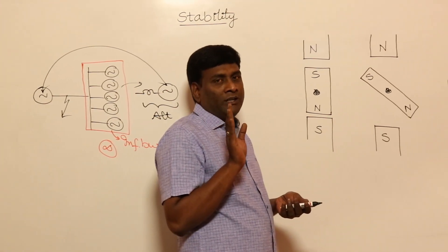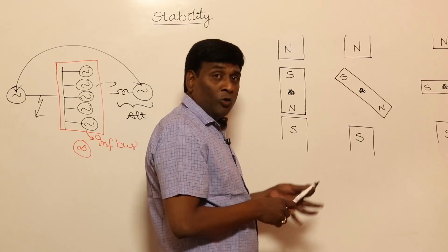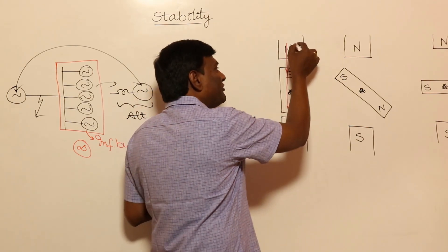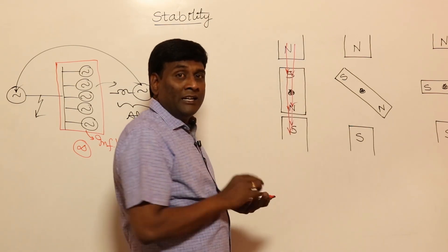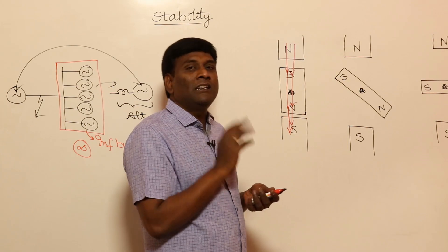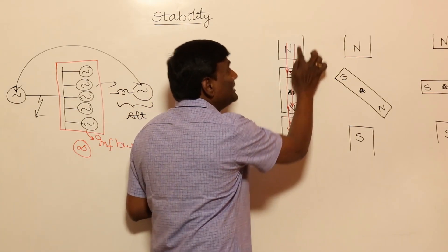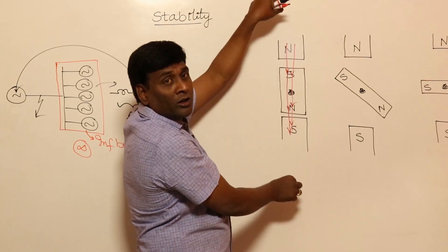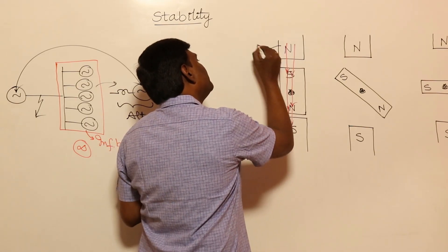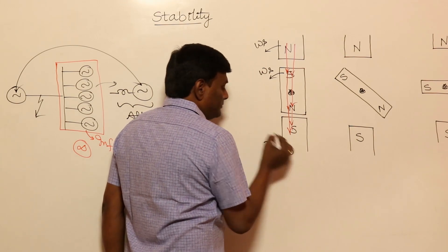If the pole is stationary and I keep the rotor here, flux will travel N to S, S to N, inside the pole — N to S. Flux will behave like stretched rubber bands. If you stretch the flux, torque will be produced. If you don't stretch it, torque will not be produced. If both poles rotate at synchronous speed aligned, net torque developed is zero.